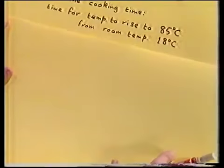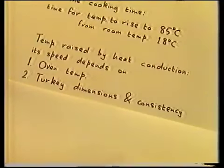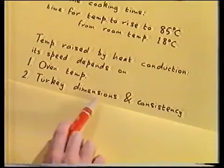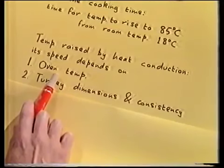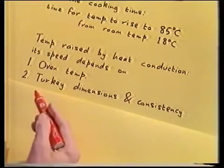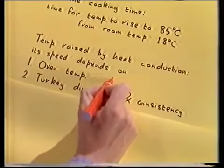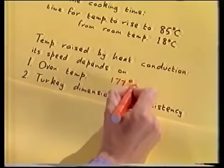To set up our model, we need to consider how cooking happens — by what mechanism is the temperature of the turkey increased to this safe value? It's a consequence of heat conduction. Heat gradually percolates through to the interior after the turkey's been put into the oven, with the outer parts always being hotter than the inner parts. The speed of this process depends on two different things: the oven temperature, and the turkey's dimensions and consistency. Since we're cooking at 350 degrees Fahrenheit — about 177 degrees centigrade — we'll assume that the oven temperature is fixed at this level.